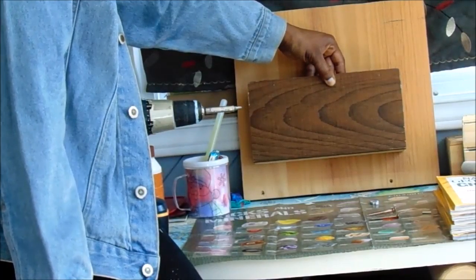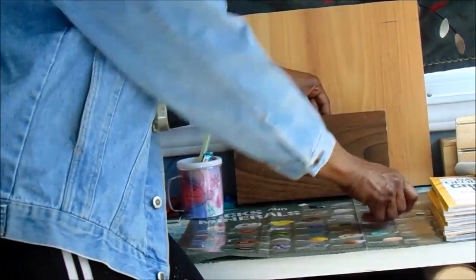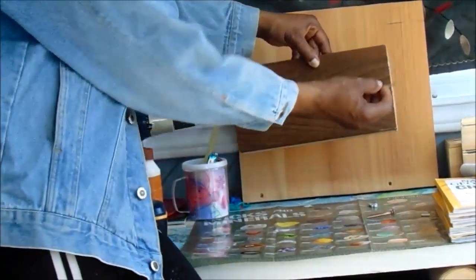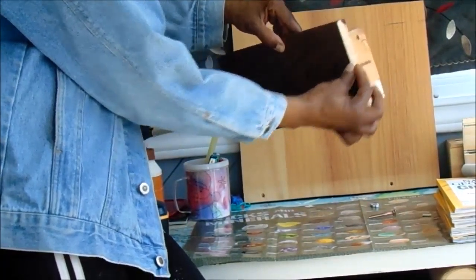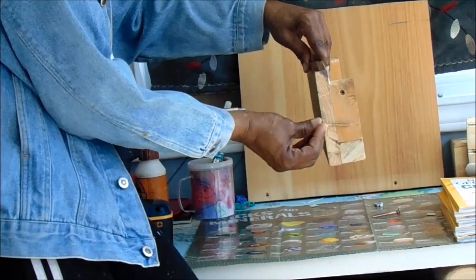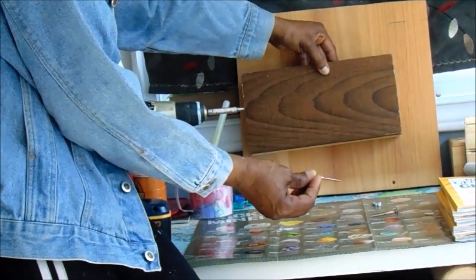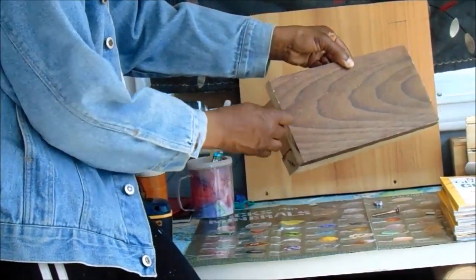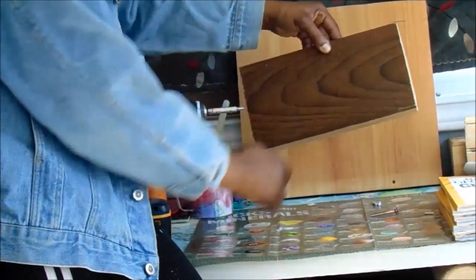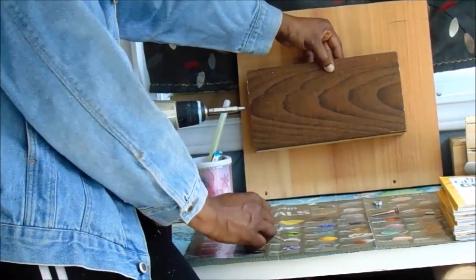I just use longer wood screws that can go through all the layers of the wood into the wall. I put one on this side, one on the other side, and then just a couple at the bottom, and your shelf will sit nicely like this onto the wall.